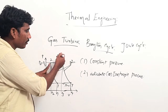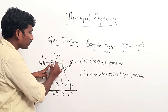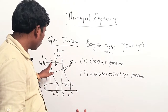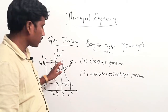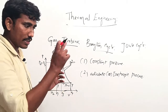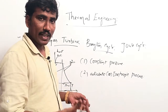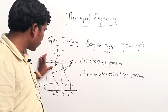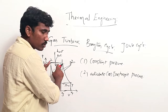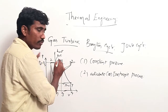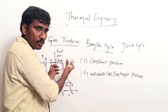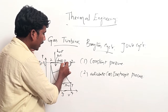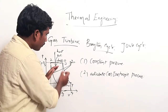At point 2, in the process 2 to 3, we will give heat — we will supply fuel here to burn the air. This 2 to 3 is the constant pressure process, meaning the pressure remains constant: P2 is equal to P3. In this 2 to 3 position, we give fuel and burn it to get maximum pressure and temperature. P2 and P3 are the maximum pressures.